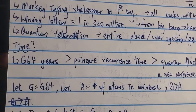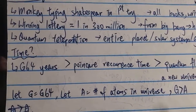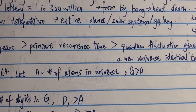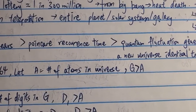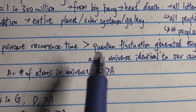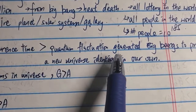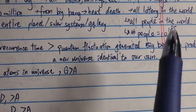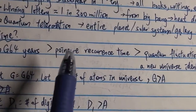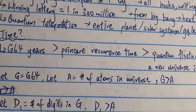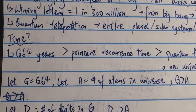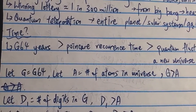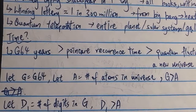What about time? g64 years is a very long time — way, way longer than the Poincaré recurrence time, which is the time required for the universe to repeat itself. That in turn is also way longer than the time required for quantum fluctuation-generated big bangs to produce a universe identical to our own. So that process takes less time than the Poincaré recurrence time, which in turn takes way less time than g64 years. If you lived g64 years, your memory would experience every single possibility and repeat many, many times.